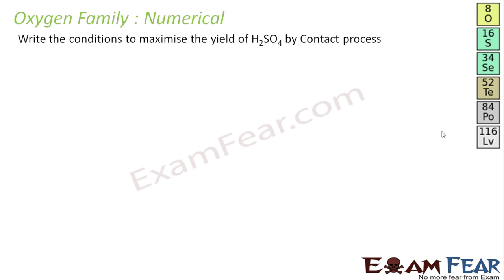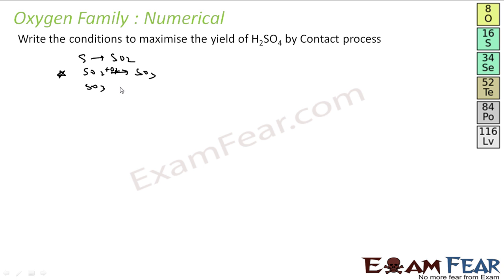Let's take some numericals now. Conditions to maximize the yield of sulfuric acid by the contact process. We just saw the contact process — again a three-step process. Sulfur is burned to form sulfur dioxide (easy step). Sulfur dioxide is converted to sulfur trioxide — this is the difficult and key step. Sulfur trioxide then reacts to form oleum, and oleum diluted in water gives sulfuric acid. The second step is the most critical step.